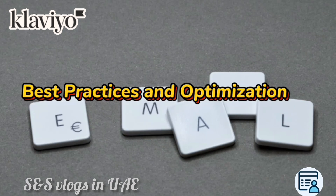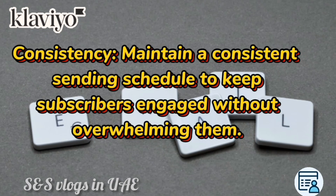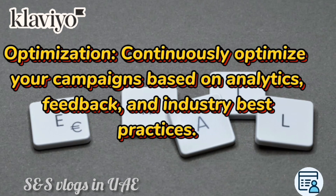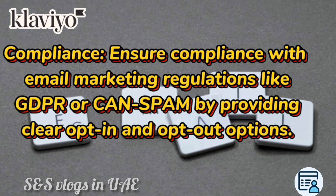Best practices and optimization. Consistency: maintain a consistent sending schedule to keep subscribers engaged without overwhelming them. Optimization: continuously optimize your campaigns based on analytics, feedback, and industry best practices. Compliance: ensure compliance with email marketing regulations like GDPR or CAN-SPAM by providing clear opt-in and opt-out options.